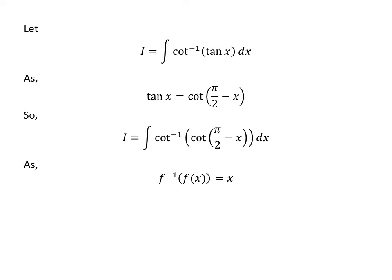As we know, inverse of function f of function f of x is equal to x. As arccotangent is inverse of cotangent function, so arccotangent of cotangent of pi over 2 minus x is equal to pi over 2 minus x.